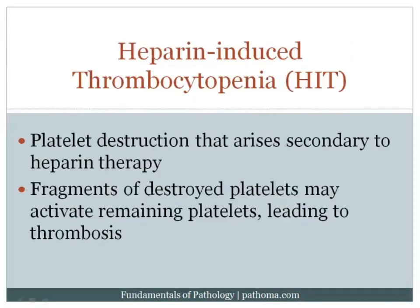The first disorder of hemostasis we want to discuss is heparin-induced thrombocytopenia. The idea is that we give a patient heparin, and they develop thrombocytopenia — a decrease in their platelet count. This occurs because heparin can form a complex with platelet factor 4, a molecule on the surface of the platelet. It is against this complex that the patient develops IgG autoantibodies, which then result in consumption of those platelets by the spleen.